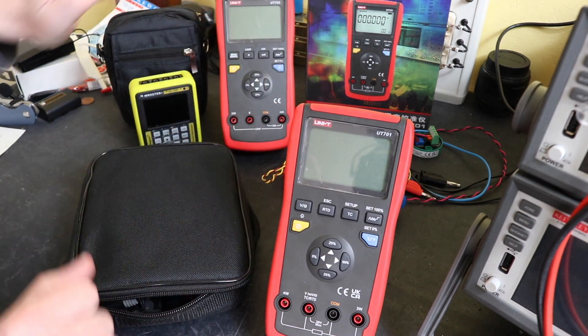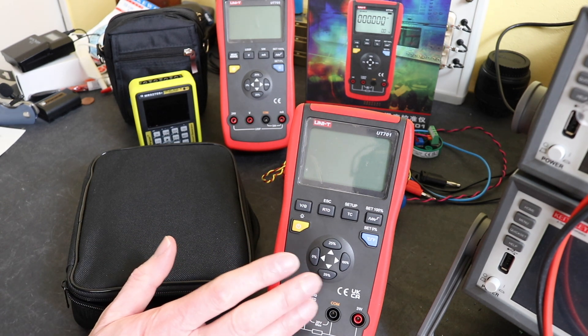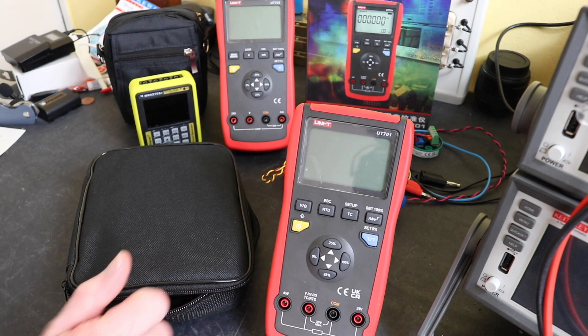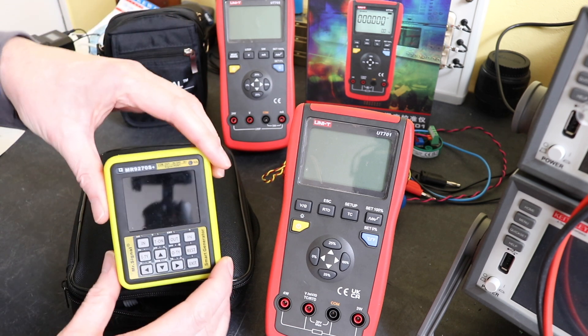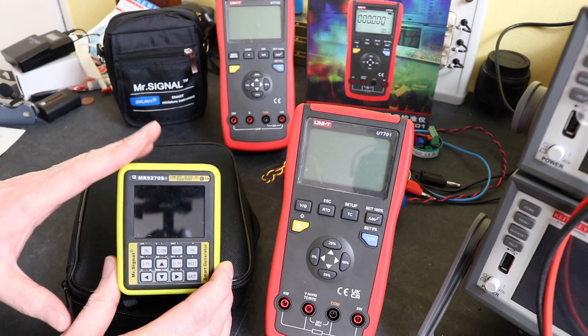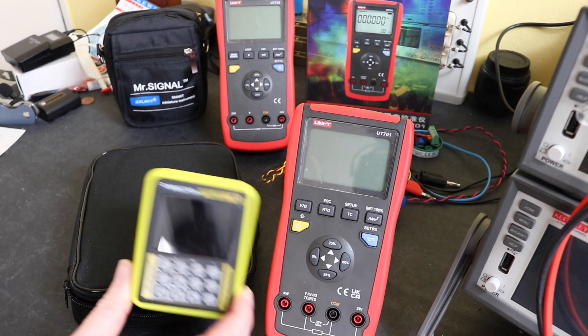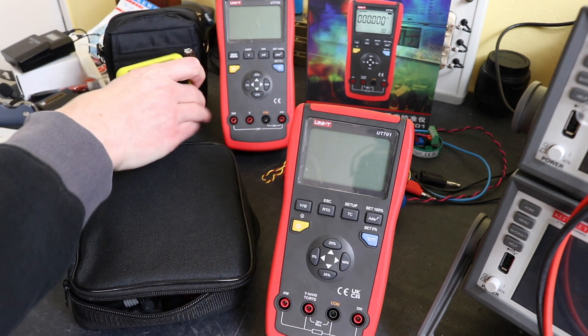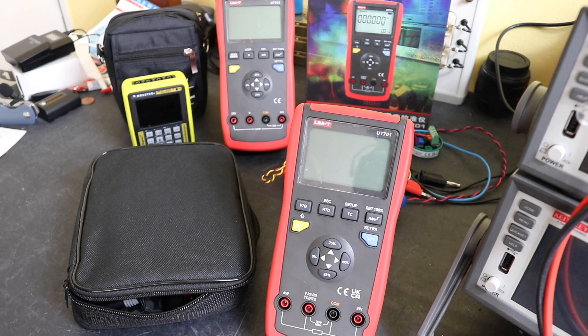So UniT and this line of instruments have chosen to split the functionality across two instruments. They're not alone in that. Other manufacturers do that, both Fluke and Charronaut do that as well. There's an option that you do get from some manufacturers unlike something like the MR9270S that we see here that has all the functionality I need built into the one quite a bit smaller compact unit. So it's up to you what methodology you want to use for your instrumentation really.